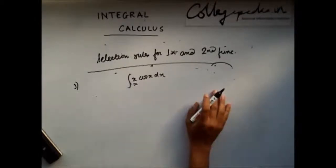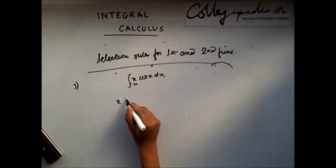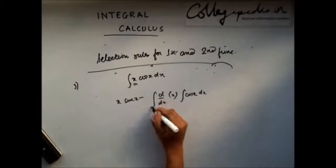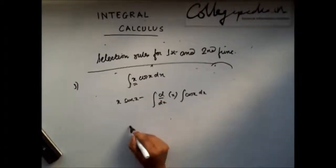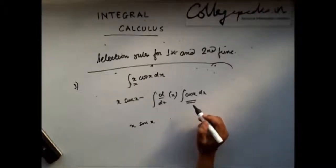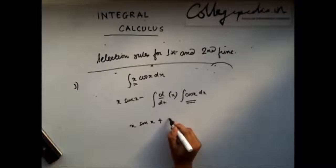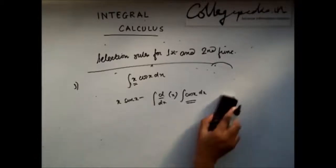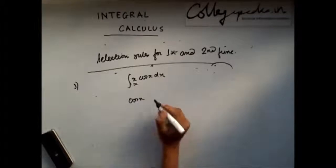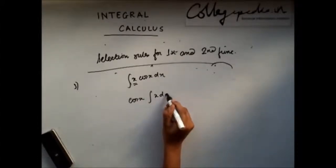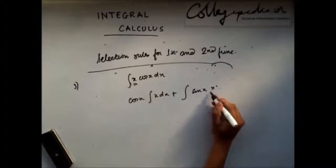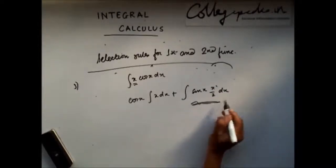The derivative of x is 1, which is easily integrable, so I'll take x as my first function. Integrating by parts: x times sin x, minus the integration of cos x times 1 dx, giving x sin x plus cos x. Now, if instead I had taken cos x as the first function, I would get cos x times x²/2, minus the integral of minus sin x times x²/2 dx, which becomes a more complex problem to solve.